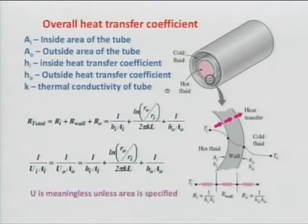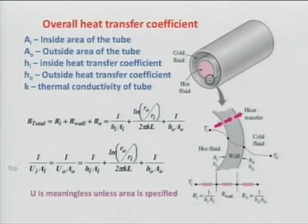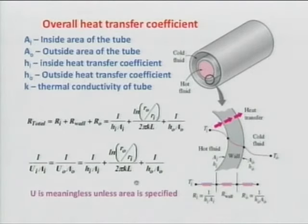Coming back to the overall heat transfer coefficient: there are plenty of applications of heat exchangers. I have the convective resistance on the inner side, conductive resistance of the wall, and convective resistance on the outer side. Whenever there is a U, there has to be an area — so I have U_i·A_i or U_o·A_o. It is a good practice to keep U and A together. U is meaningless unless the area is specified, whether it is based on inner area or outer area.